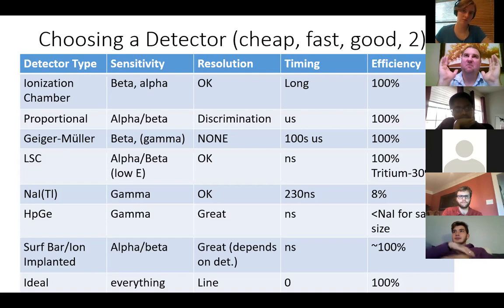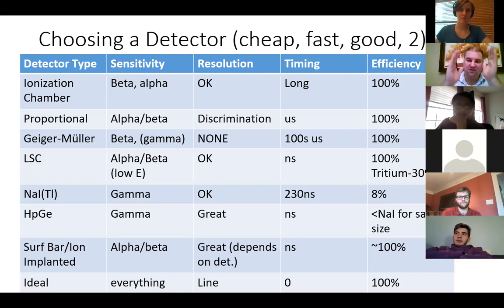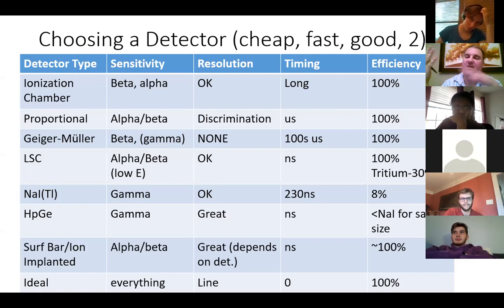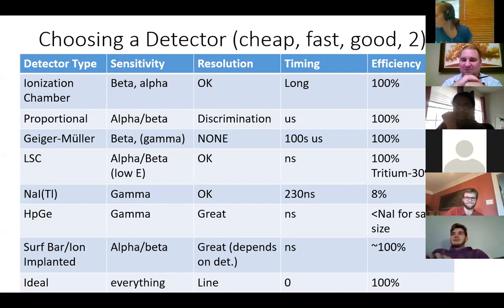If you want to be quantitative — to determine how much of a source is present — you need to know the activity of your calibrating source to calculate the absolute efficiency of your setup. Key detector characteristics to weigh are sensitivity, resolution, timing, and efficiency. For spectroscopy and unknown identification, resolution is the priority. If you know what you have and just need quantity, resolution is less critical and sodium iodide would be a great choice.